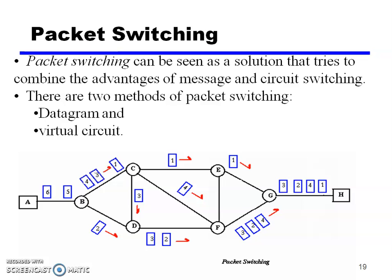To summarize: circuit switching is used for mobile communication, call establishment, data transfer, and call teardown. Telephone conversation uses circuit switching. Message switching is used for chatting or email. Packet switching is used for the internet. The third type is packet switching, where all information is divided into small parts called packets. Packet switching can be seen as combining the advantages of both message and circuit switching. There are two types: datagram and virtual circuit.